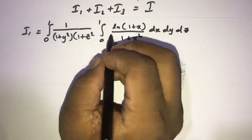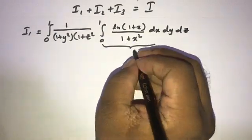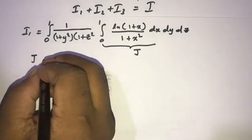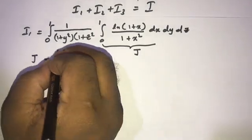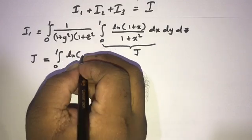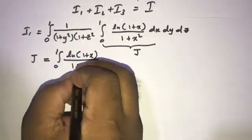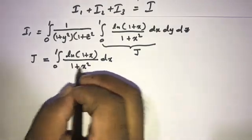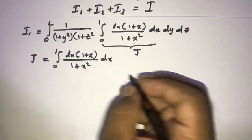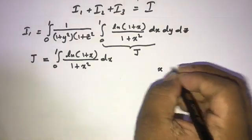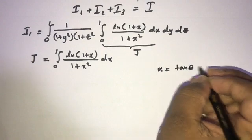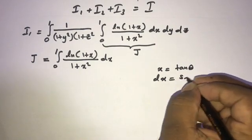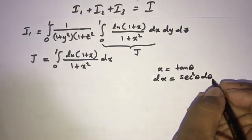Now take I1. So I1 is equal to the integral from 0 to 1, 1 over (1 + y²)(1 + z²) times J dy dz. We are going to evaluate this inner integral. So if we take J equal to the integral from 0 to 1 of natural log of (1 + x) over (1 + x²) dx. Now we can evaluate this integral using substitution. So let x = tan(θ), differentiate with respect to θ, so dx = sec²(θ) dθ.